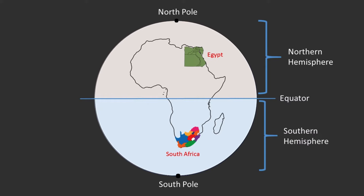The Southern Hemisphere is like the bottom half. It includes places like Australia, South America, and Southern Africa. South Africa is south of the equator, so it is in the Southern Hemisphere. In which hemisphere are the following countries? Japan, Senegal, New Zealand. Look for a map of the world to help you answer this.